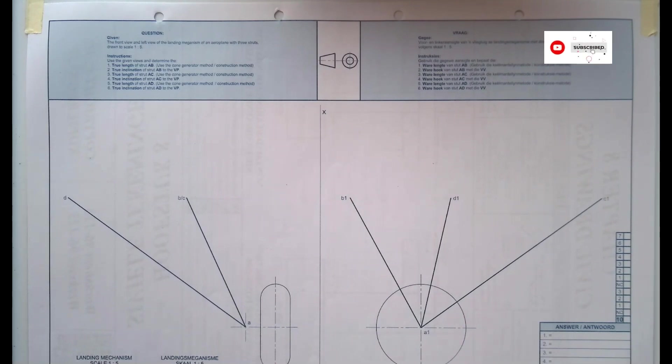As you can see you are given the front view and the left view of a landing mechanism. So from what we are given here this is our front view, the side and then this side is our left view. All you need to focus on is your lines because that is what we are finding the true length for.